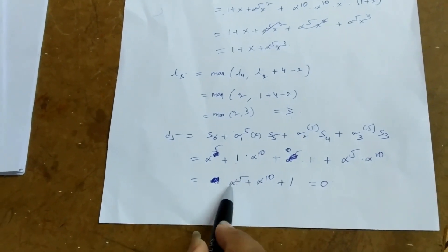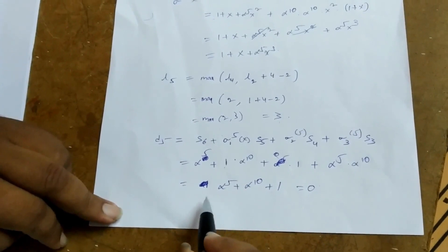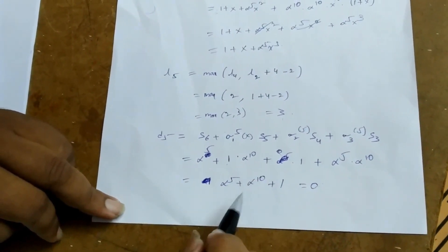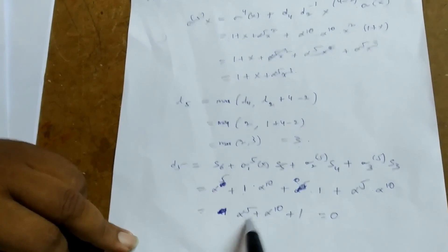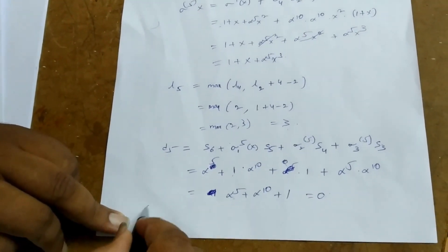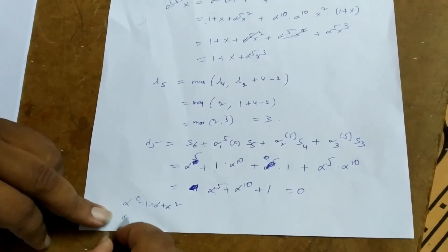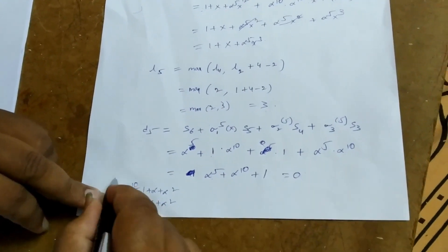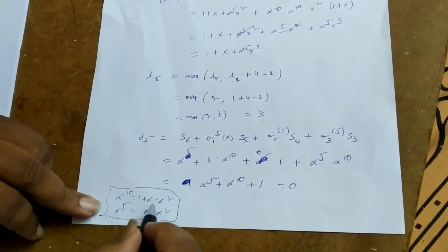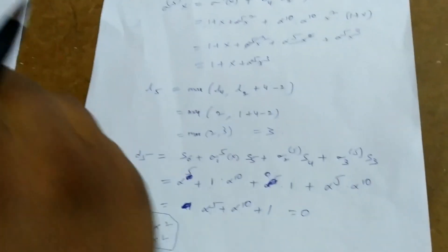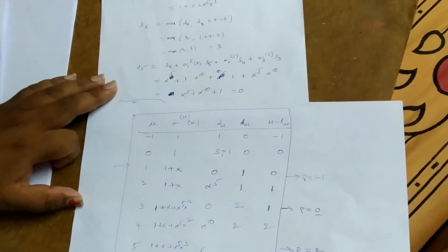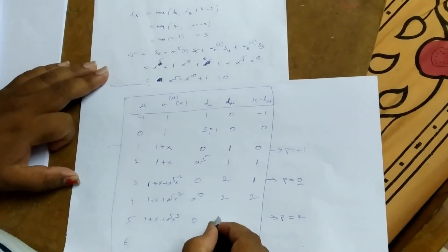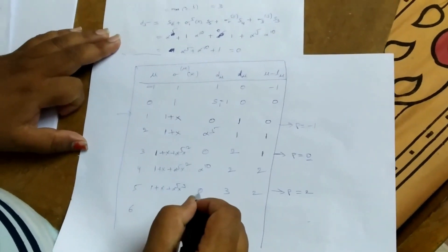To compute d5 we need α^5 + α^10 + 1. From the GF table (primitive polynomial 1+x+x^4): α^10 = 1+α+α² and α^5 = α+α², so α^10 + α^5 = 1, meaning 1+1=0. Therefore d5=0. The updated values: σ_5(x) = 1+x+α^5·x³, d5=0, L5=3.